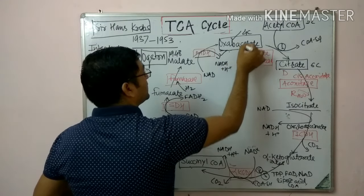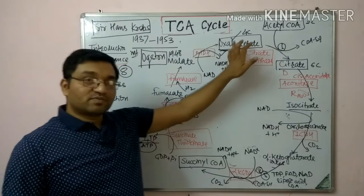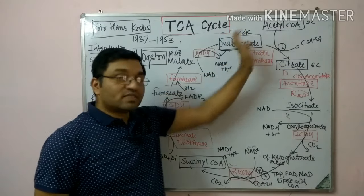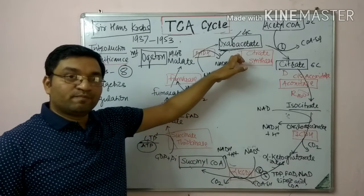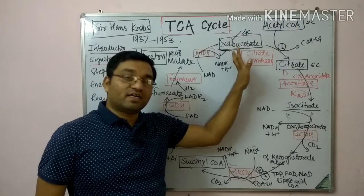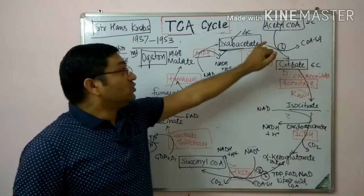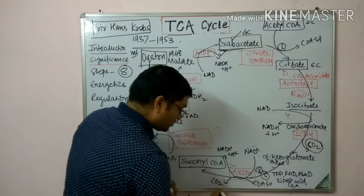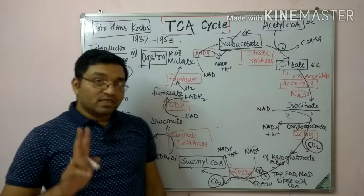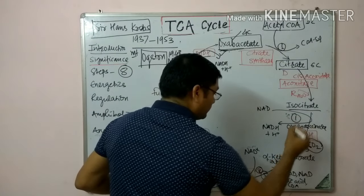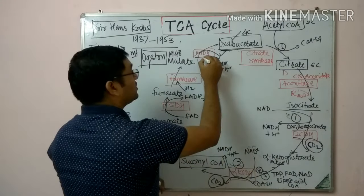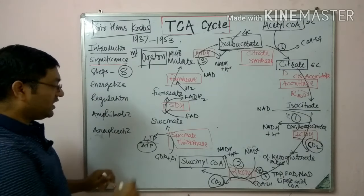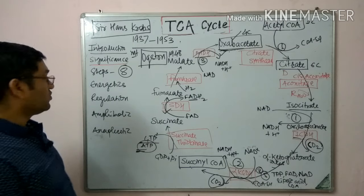Then fumarase adds a water molecule to convert fumarate into malate, and malate is converted into oxaloacetate by malate dehydrogenase, where NAD is converted into NADH. Oxaloacetate is regenerated and is known as the catalyst in the Krebs cycle. Summary of products: two carbons from acetyl CoA are liberated as CO2. There are three sites for NADH production — isocitrate dehydrogenase, alpha-ketoglutarate dehydrogenase, and malate dehydrogenase — one FADH2 by succinate dehydrogenase, and one ATP by substrate level phosphorylation.